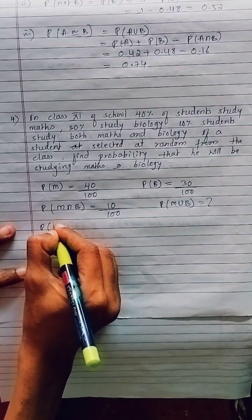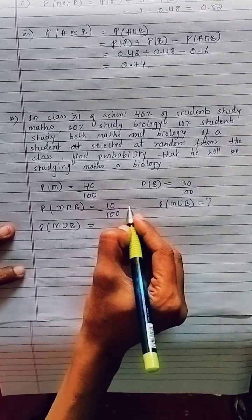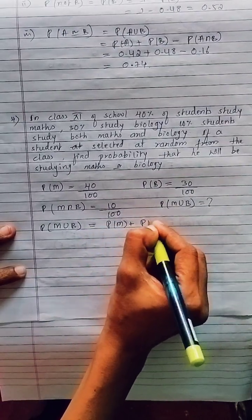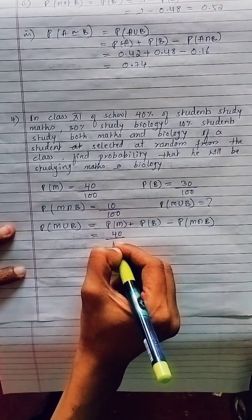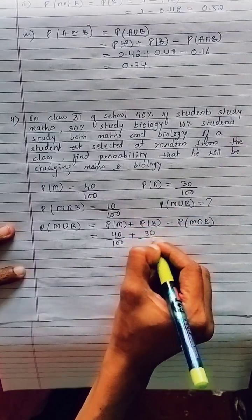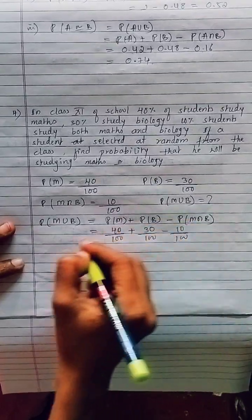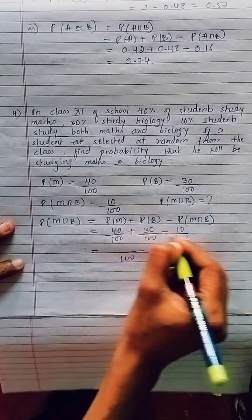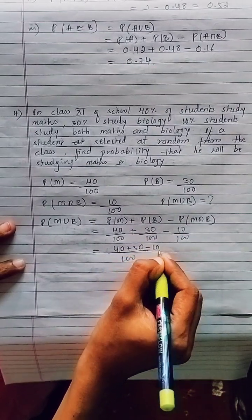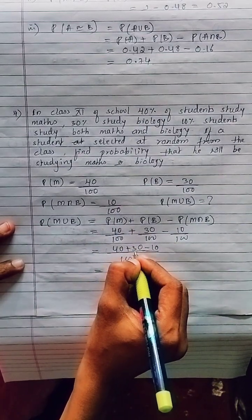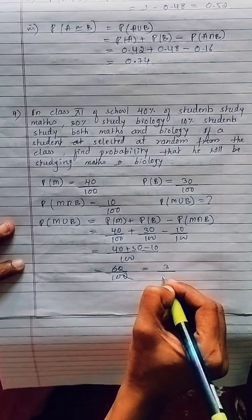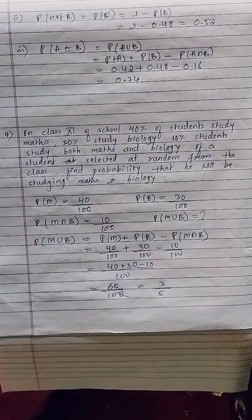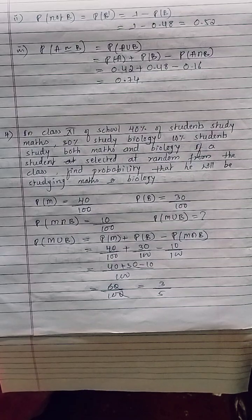Using the union formula: P(M ∪ B) = P(M) + P(B) − P(M ∩ B) = 40/100 + 30/100 − 10/100. Since LCM is 100, we compute directly: (40 + 30 − 10)/100 = 60/100 = 3/5. The probability that the student studies Maths or Biology is 3/5.